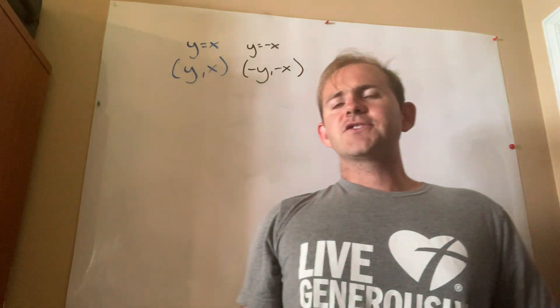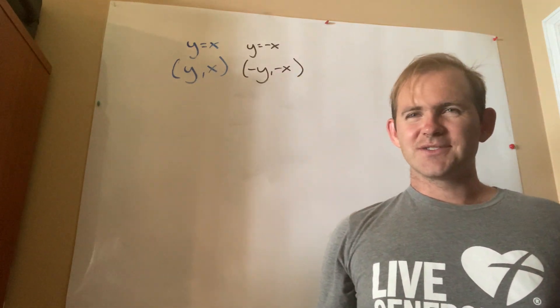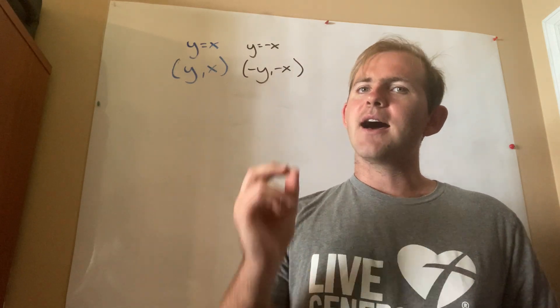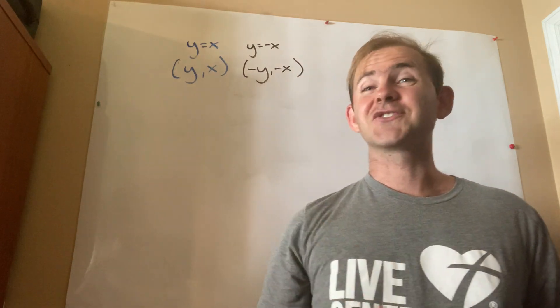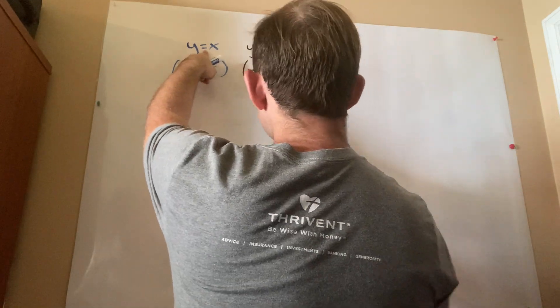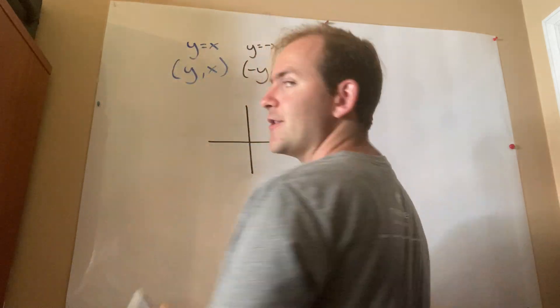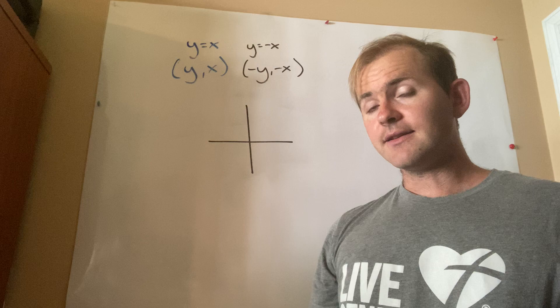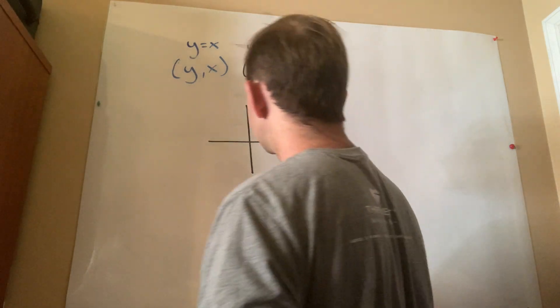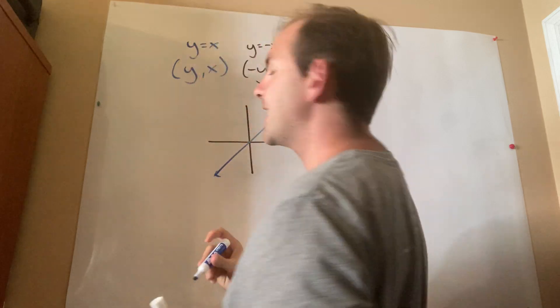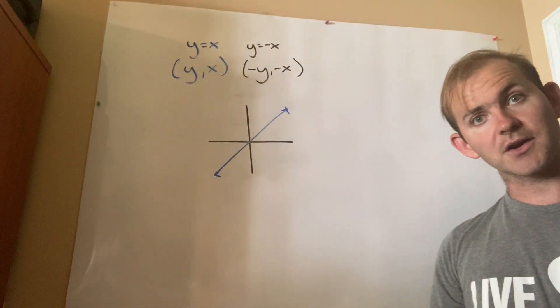Okay, now before I actually show the mechanics of how this works, I want a few words about what this actually looks like. From algebra 1, you guys should remember that y equals x is a line with a slope of 1 and y-intercept of 0. So it kind of looks something like this. It's just a diagonal line going upward through the origin.